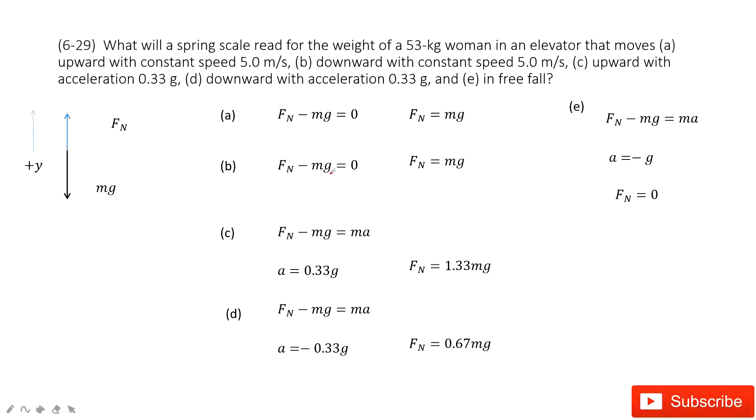So first one we can see, we have the woman in the elevator. And the first one, it moves at a constant speed. We need to find acceleration. So for this one, we find the normal force. For the person in the elevator, the first force acting is gravity. The second force is the normal force up.